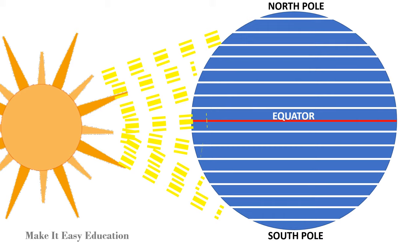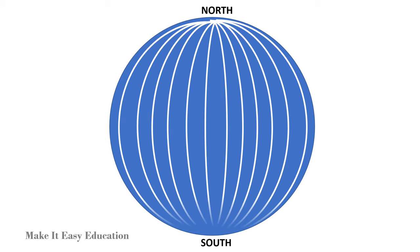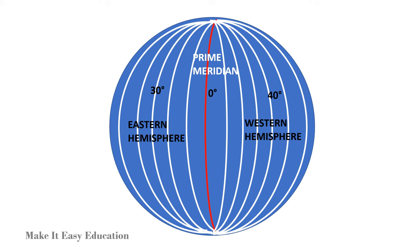Longitude. Lines of longitude are vertical lines that run north to south. Lines of longitude are called meridians. The prime meridian is at 0 degrees longitude. The prime meridian divides earth into the eastern and western hemisphere.